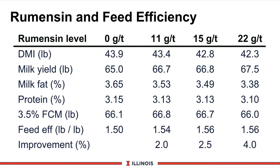Let's take a quick look at the actual research done with rumensin. There are four different levels — the levels studied by FDA in the approval process. Dry matter intake decreases, which is a plus, while milk yield is actually increased, giving a win-win in feed efficiency: slightly more milk with slightly less feed. Milk components can change — butterfat drops significantly at really high levels, while milk protein remains very constant. Feed efficiency improves from 1.5 to 1.56, and cattle also gained weight at the higher levels of monensin.